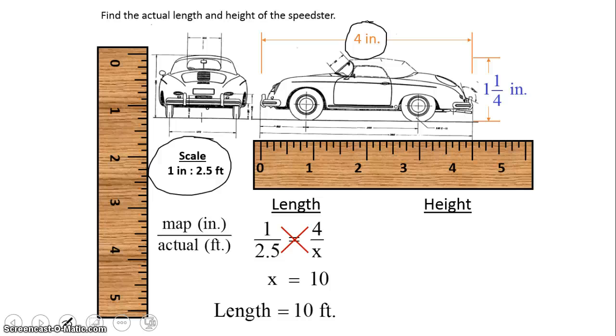Now let's try the height. We're still going to use the same scale for the first ratio. That's going to be 1 over 2.5. And remember we're using inches in the numerator and feet in the denominator. So we must keep that consistent in our next ratio.